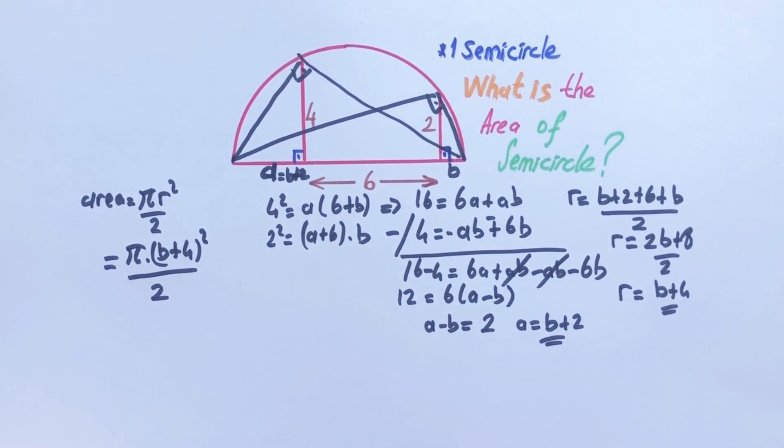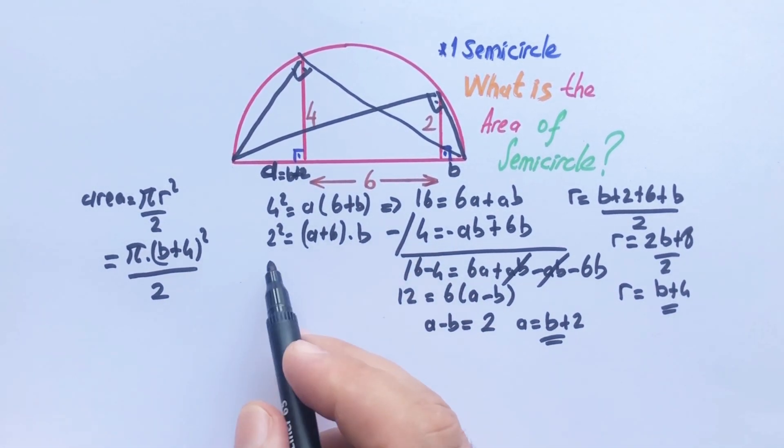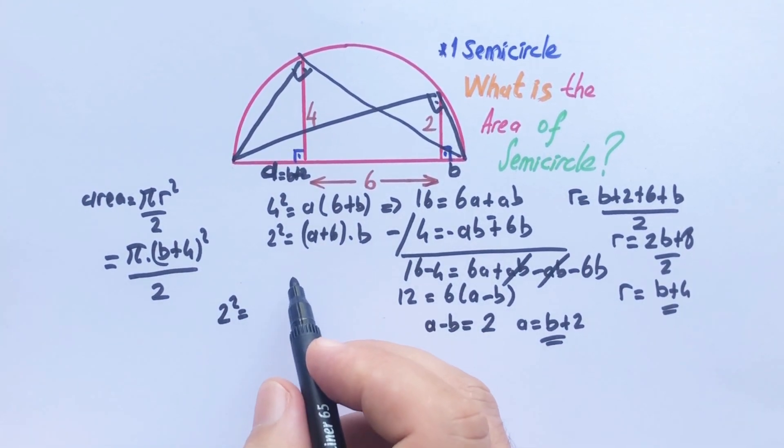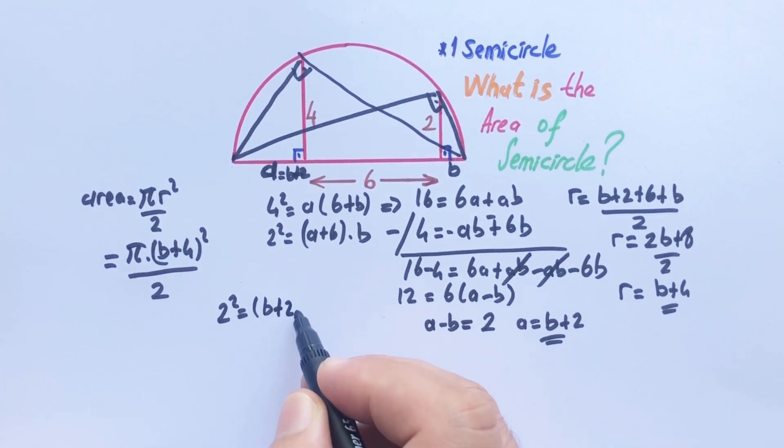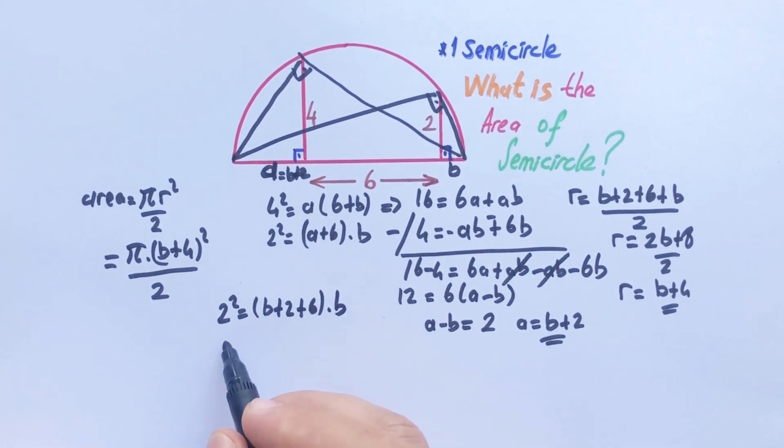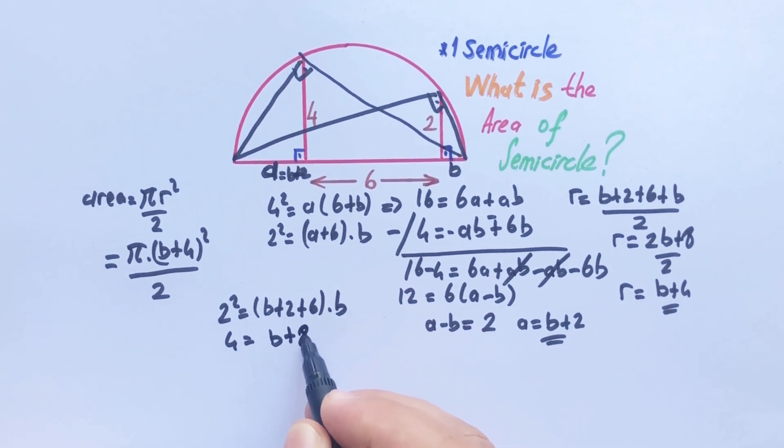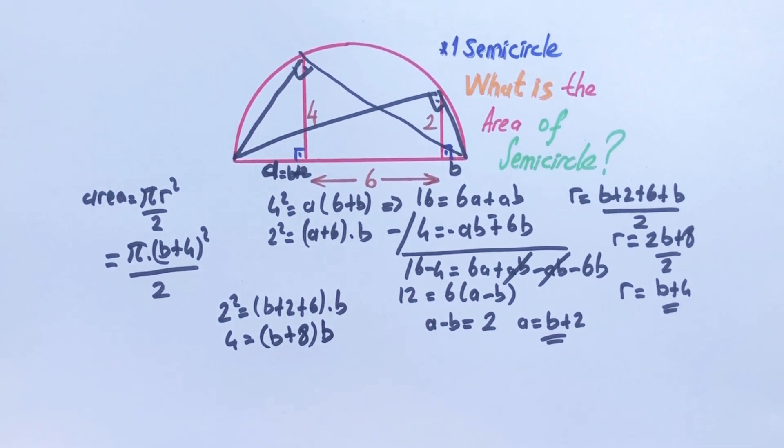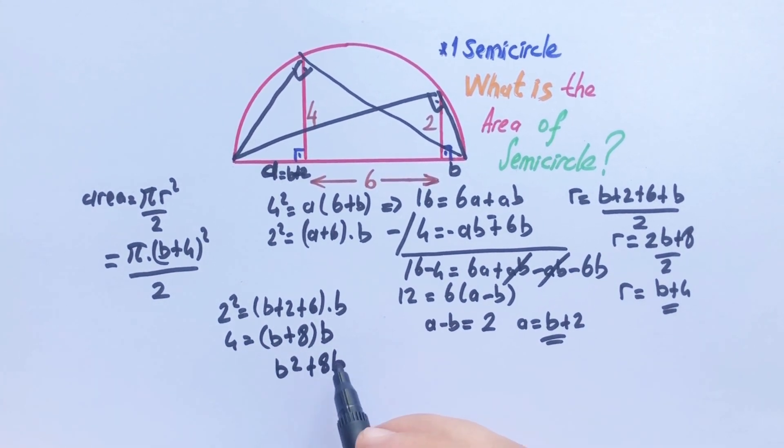If we calculate b plus 4 you will get the area. Let's plug in value of a in this formula. 2 squared equals (b plus 2 plus 6) times b. 4 equals (b plus 8) times b. So b squared plus 8b minus 4 equals 0.